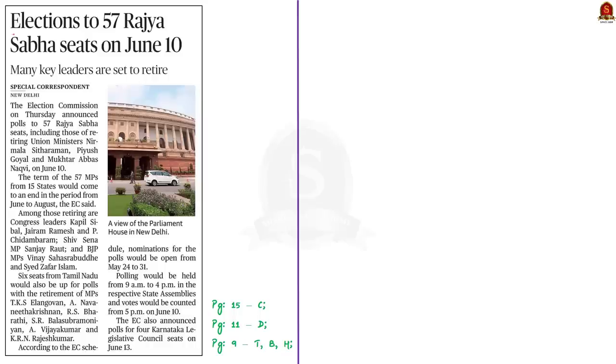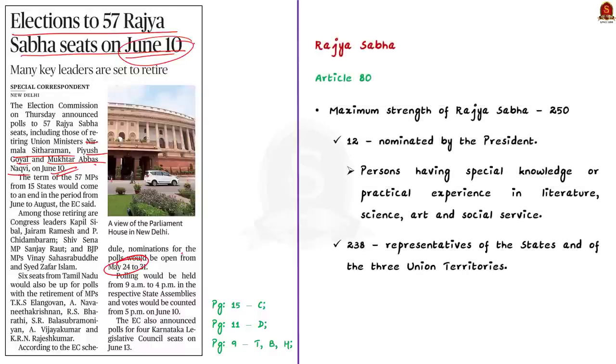With these key learned points, let's move on to next news article discussion. See this article, it says that Election Commission announced polls to 57 Rajya Sabha seats including those of retiring union ministers Nirmala Sitharaman, Piyush Goyal and Mukhtar Abbas Naqvi on June 10. According to the Election Commission schedule, nominations for the polls would be opened from May 24 to 31. This is the crux of the article. In this context, let us learn about elections to Rajya Sabha.